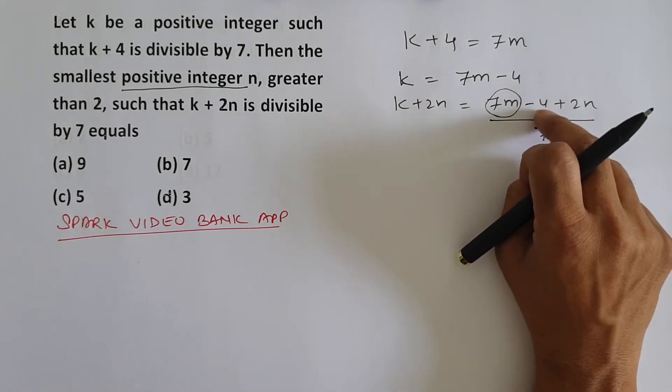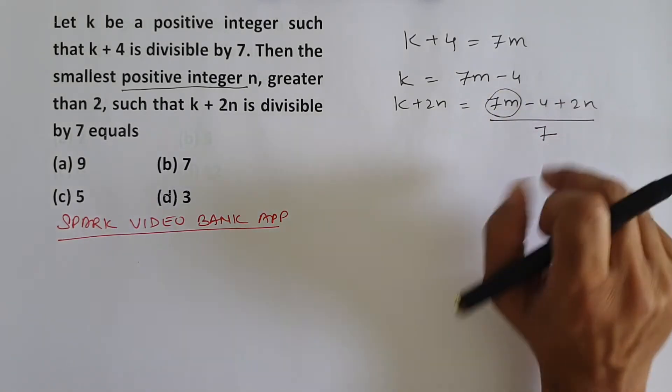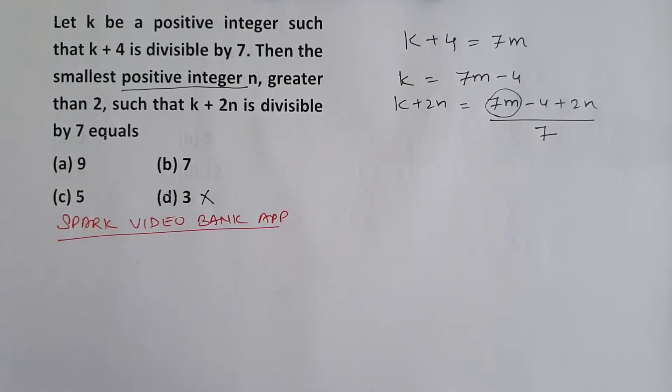3 is 6. 6 minus 4 is 2. Is 2 divisible by 7? No. So this cannot be the answer.